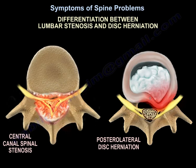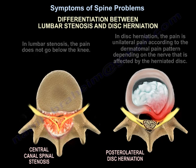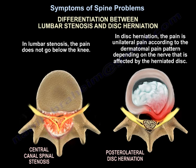History can also help differentiate between lumbar stenosis and disc herniation. In lumbar stenosis, the symptoms can be bilateral and the pain is nonspecific, and the pain does not go below the knee. In disc herniation, there are always unilateral symptoms and the pain is unilateral according to the dermatomal pain pattern, depending on the nerve affected by the herniated disc.